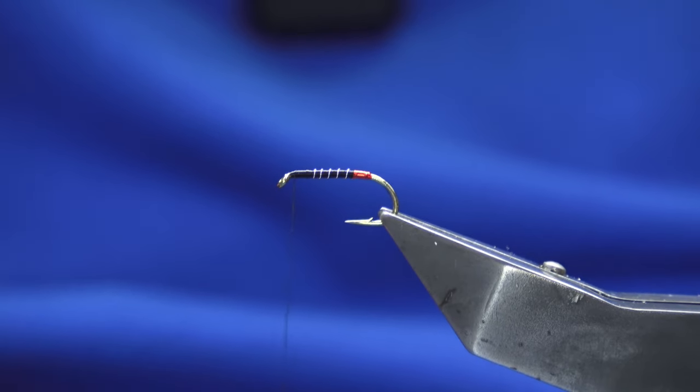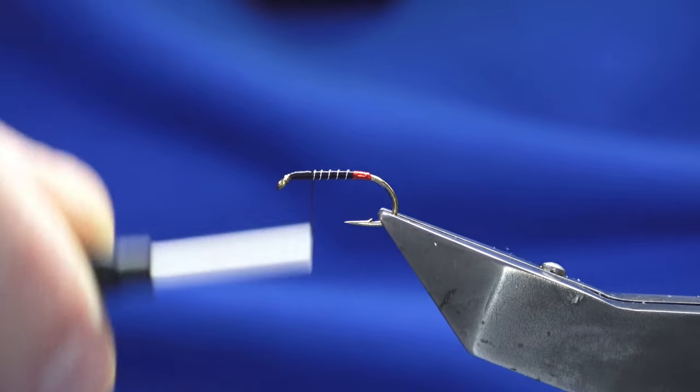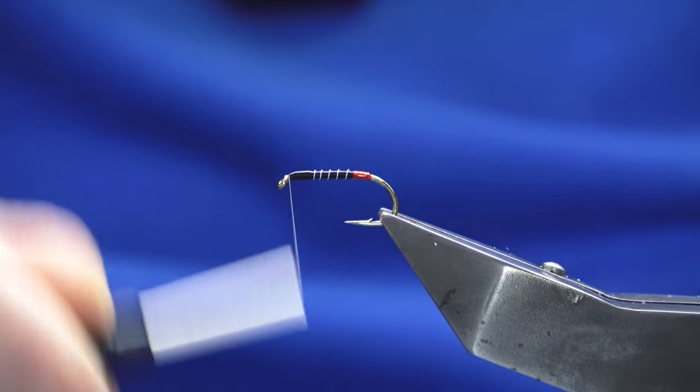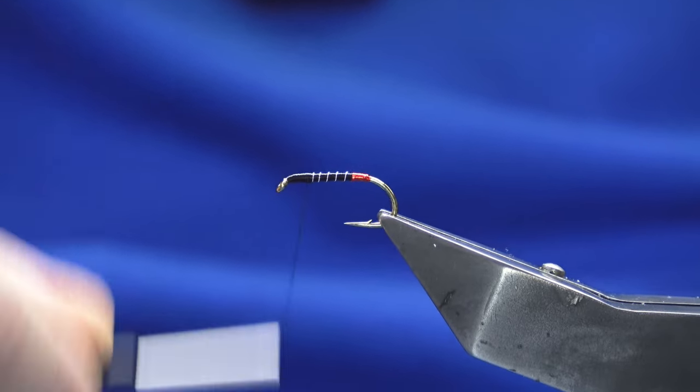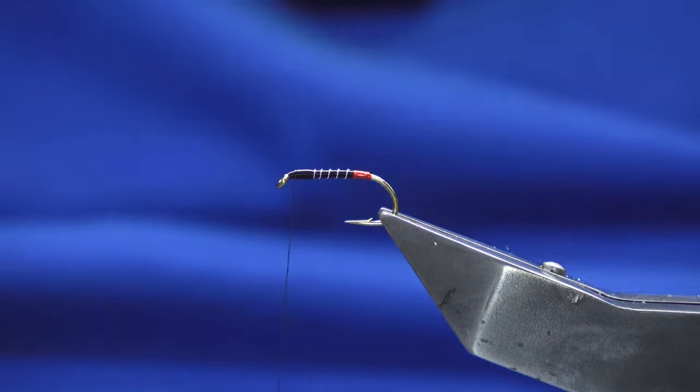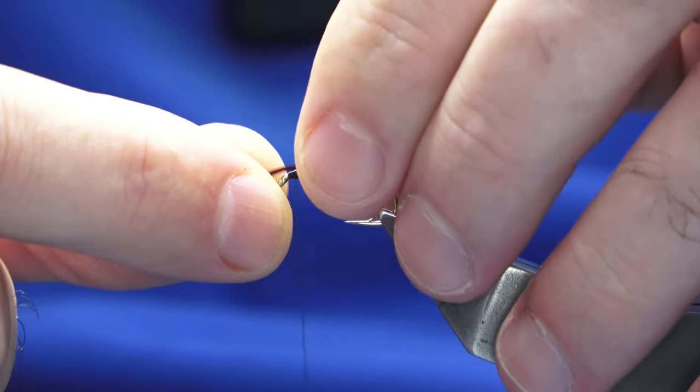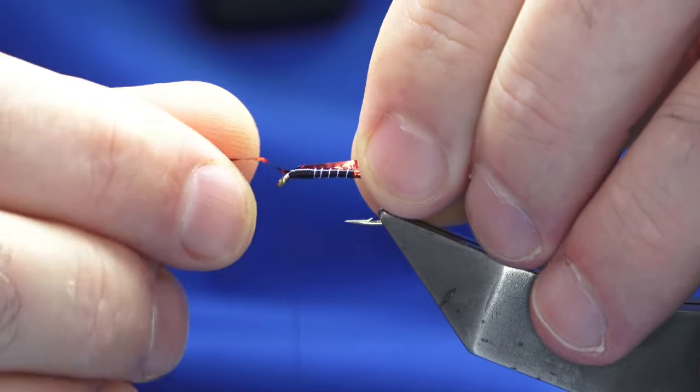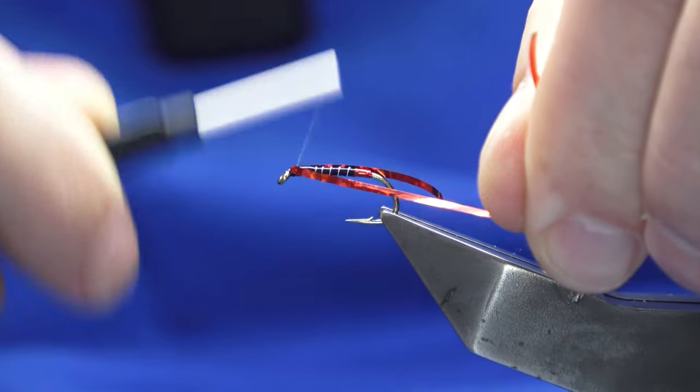Some people like a thin thorax, some people like it bulky - it's really up to you at this stage. I'm going to come back down and catch in the same piece of holographic tinsel that we used. I want to try and catch it on the side, then we'll fold this bit.